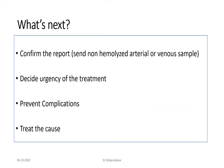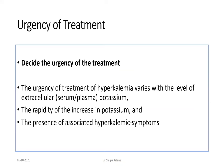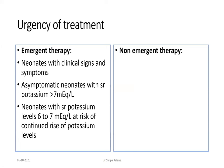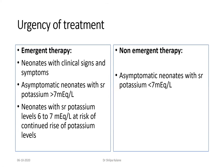Once potassium is identified as elevated and the clinical situation is confirmed, send a non-hemolyzed arterial sample but do not wait to start treatment. Urgency of treatment is based on: level of potassium, rapidity of rise, and presence of symptoms. Emergent treatment is indicated for symptomatic babies, asymptomatic neonates with potassium greater than 7 mEq/L, or neonates with potassium greater than 6 mEq/L at risk of continued rise. Non-emergent therapy is for asymptomatic neonates with potassium less than 7 mEq/L.